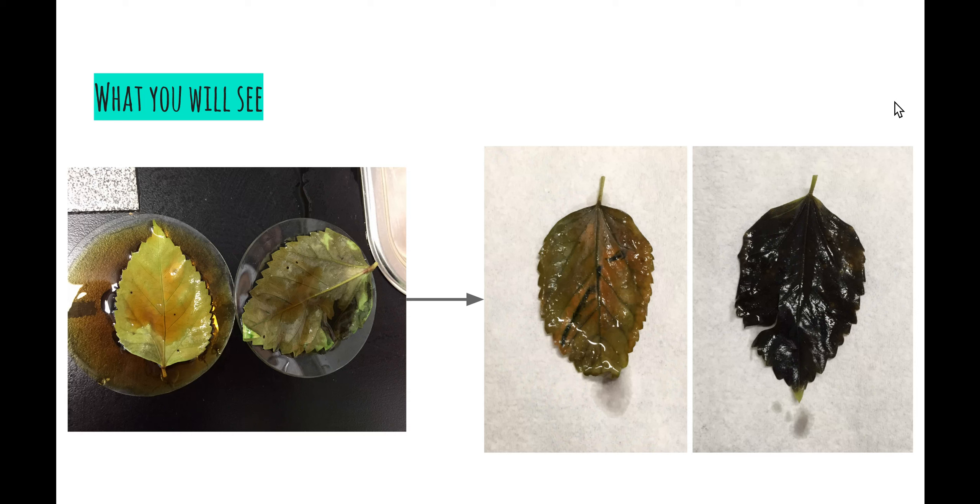So when we carry out the investigation, what we should see when we add our iodine solution to our two leaves is that one leaf the iodine would not change color and the other should go a blue black color. This shows us that the leaf that hasn't had any color change is our covered leaf.